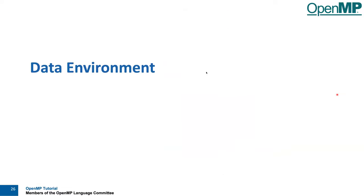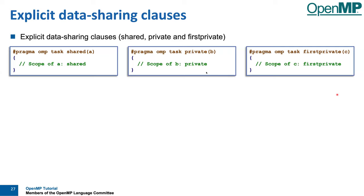Let me talk about the data environment. This is very similar to what you heard previously. When you do task shared, the scope of a variable A in the task is shared — if other tasks also have A shared, they see the same A. When you do private B, the scope of B will be private: that task has its own task-local copy that no other task can see. Firstprivate is essentially the same thing, but now we take the value of C from the parent task and copy it into the private variable inside the new task so you can use it there.